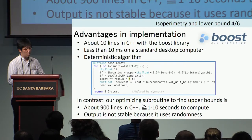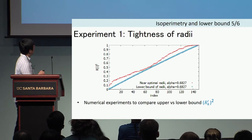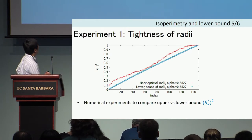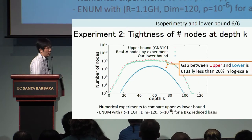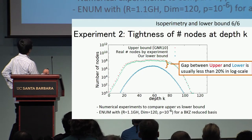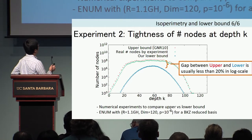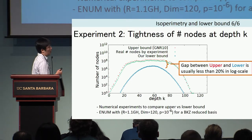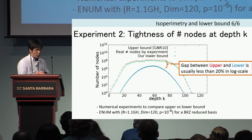This is our first result. For tightness: the red curve is the upper bound computed by cross-entropy and the blue points are the lower bound computed by our formula — you can see they are close to each other. The number of nodes is also tight: the red points show the upper bound from the GNR formula, and the blue points show our lower bound. The gap between upper and lower bound is usually less than 20% in log scale, though this is an experimental observation.